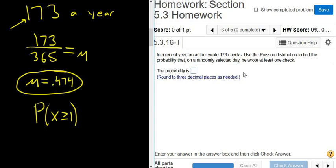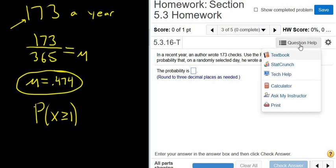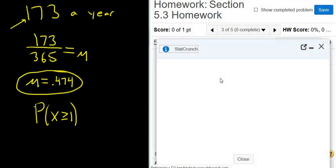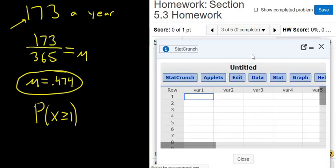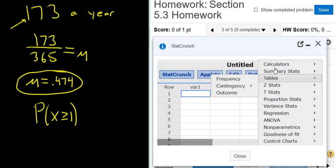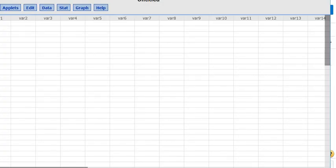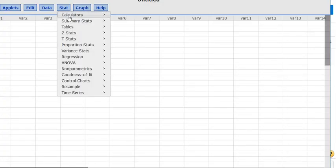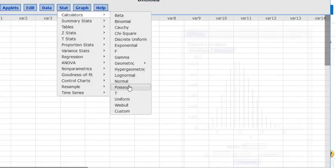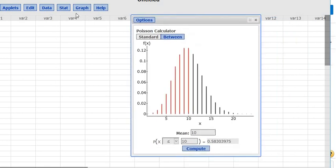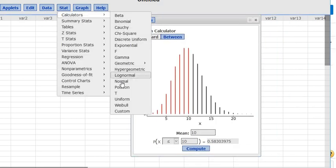All right, now we'll go to StatCrunch and type everything in. So you click on Question Help, you go to StatCrunch, and then it's Poisson. So Stat, Calculators, Poisson. Let me scroll up. You can't see it, so I'm going to make this bigger. There we go, it's a little bit better. Stat, Calculators, and then you go to Poisson.